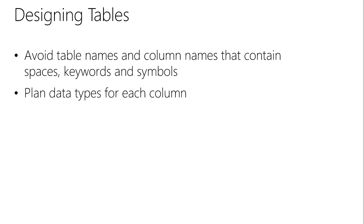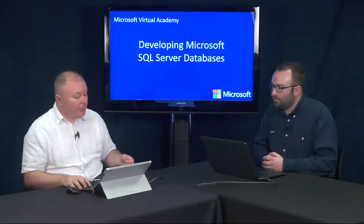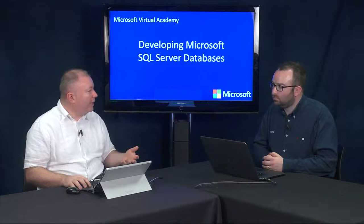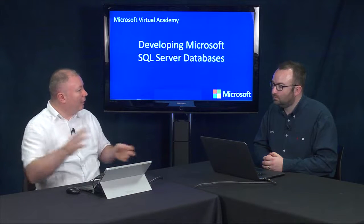Next, plan the data types for each column. Data types control what data can go in a column, but it's not as simple as just saying 'I want numbers here.' You have tinyint, int, bigint — each allowing different sizes. Plan not just for current needs but also for capacity and growth expectations. With strings, consider whether you need fixed-length or variable-length types.